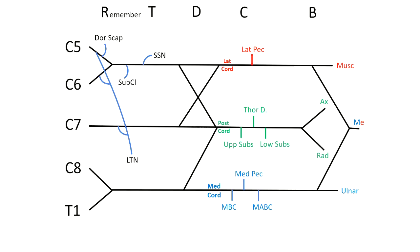Now, the mnemonics I use to remember these for the roots, trunks, divisions, cords, and branches is remember to drink cold beer. And then I label the trunks upper, middle, and lower.